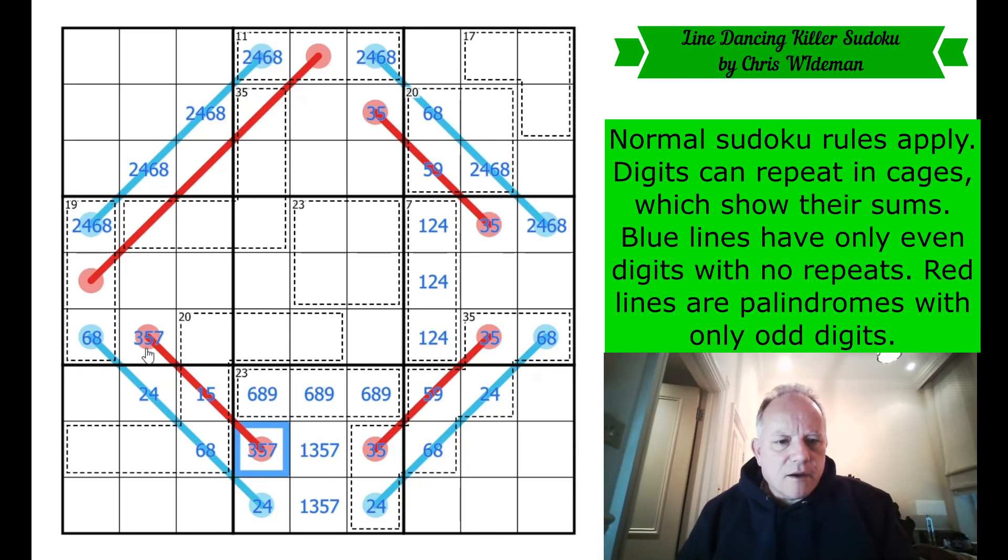So now this can't be a 3 on the end. It could still be 5, 5, 5 though. If that was a 5, we'd have 6, 2, 1 here and 1, 2, 3 here. And that does just work. It's close though. It's close to breaking.